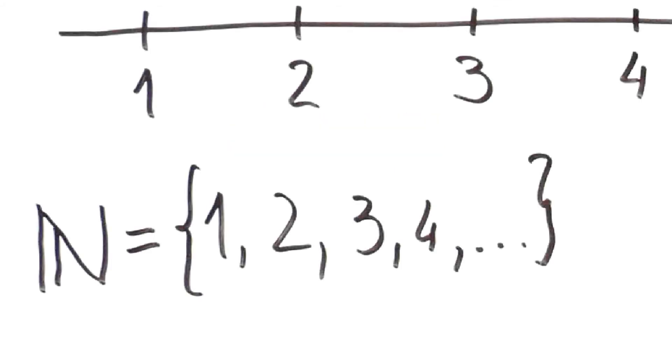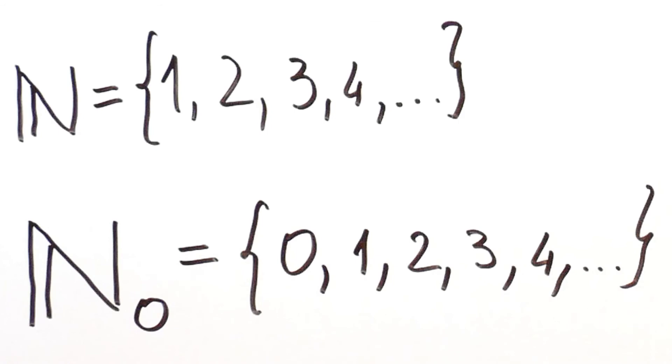We saw that natural numbers are numbers 1, 2, 3, 4 and so on, namely the numbers that we use to count something. If we include 0, then we are talking about the set of natural numbers with 0.